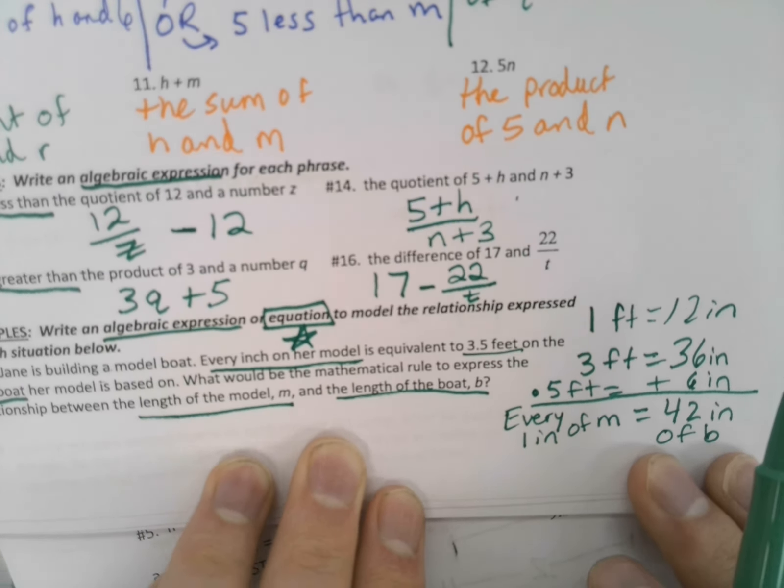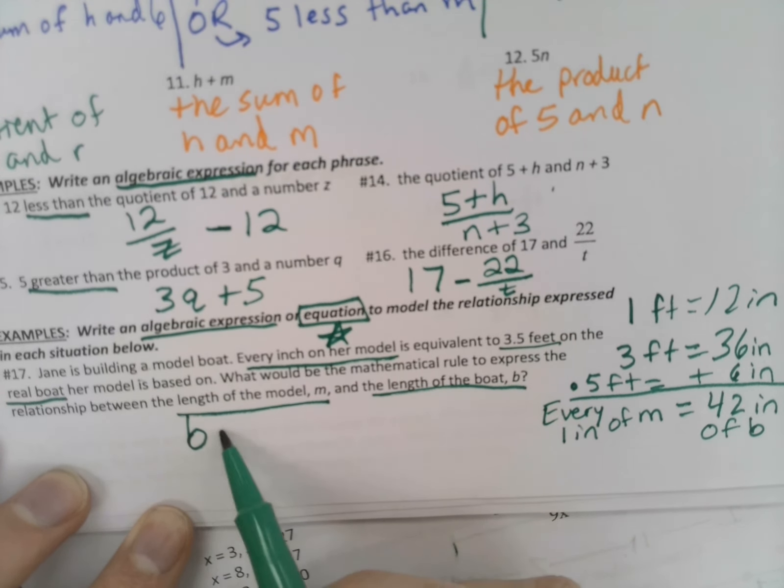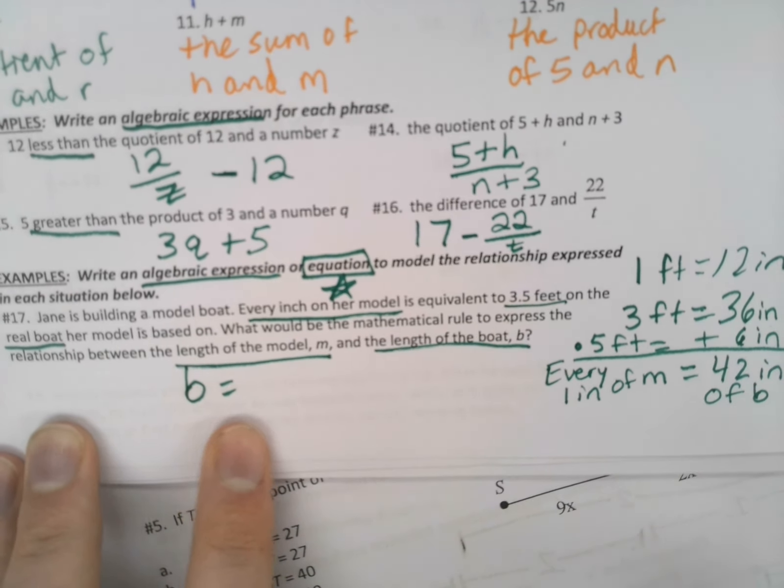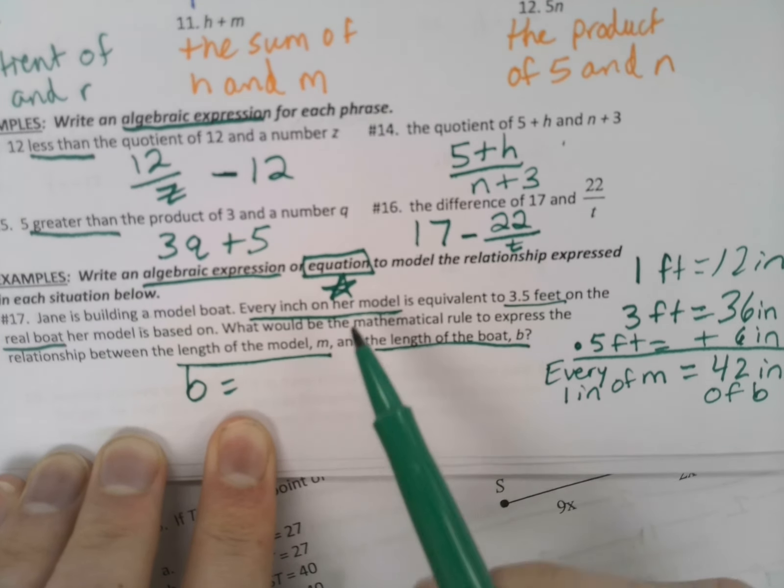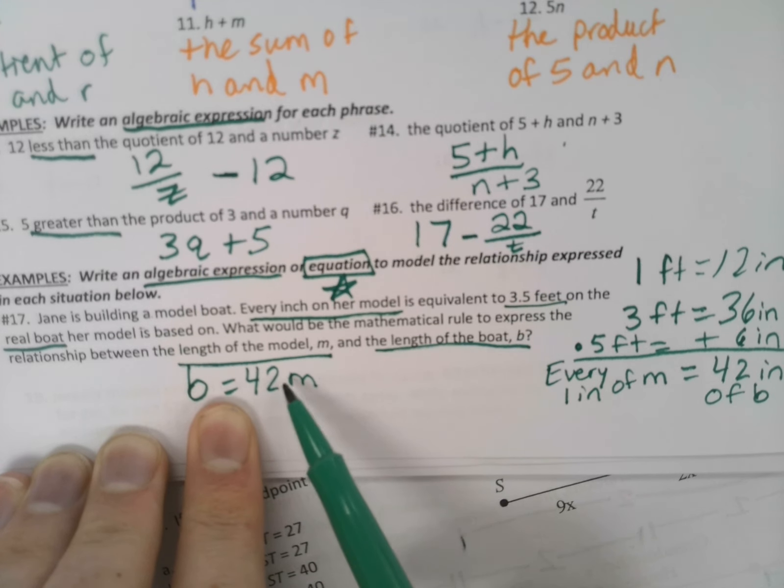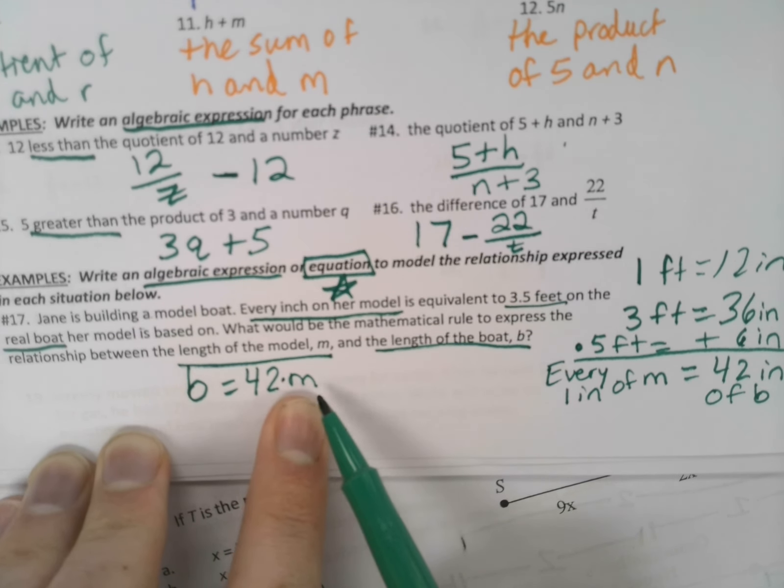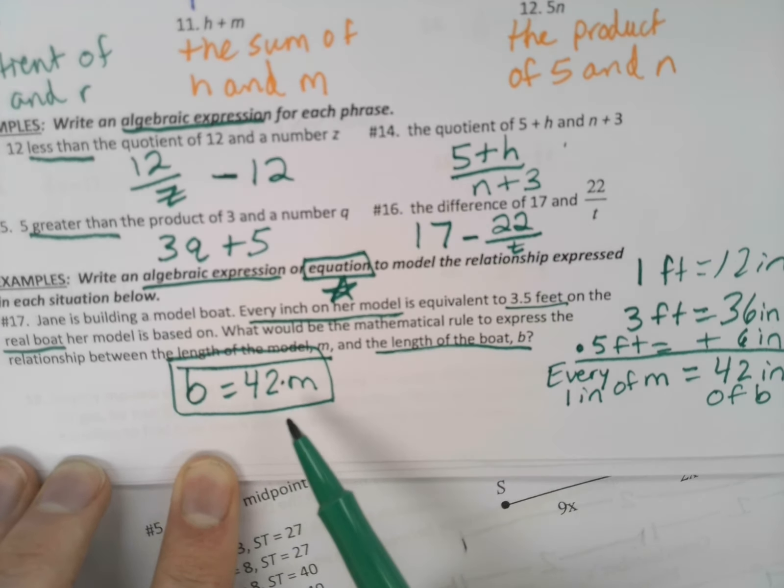So if we add all that up, we find out that for every inch on her model, that's really going to be 36 inches plus 6 inches, 42 inches on the real boat. So let's make that comparison here. Every 1 inch of M is equal to, M being our model, 42 inches of B, B being the length of the boat. So how can we come up with an equation here? Well, we can say that the length of the boat, B, is really just going to be 42 of M. Because if every inch of the model is really 42 inches on the boat, then the boat is going to be equal to 42 times every inch on the model. So B equals 42 times M. That would be our expression, or not our expression, our equation there. That would model how the boat compares to the model.